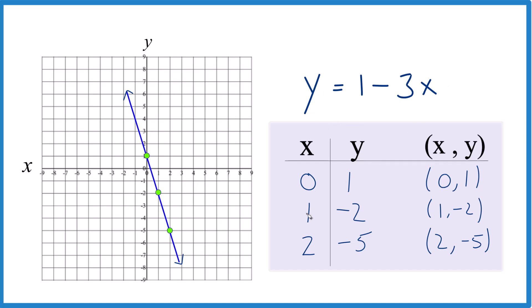And again, you can use whatever values you want. If you used a different value, you'd get a different point. But it'd still be somewhere on the line for y equals 1 minus 3x. It's Dr. B. Thanks for watching.